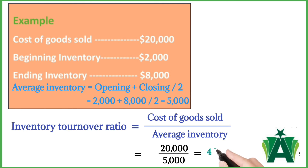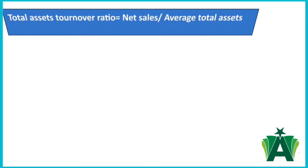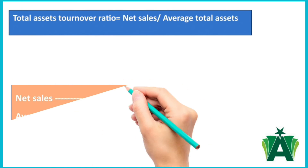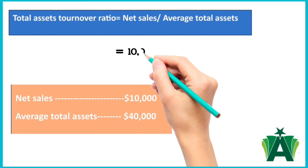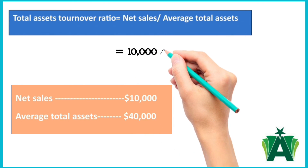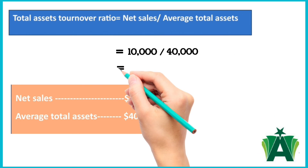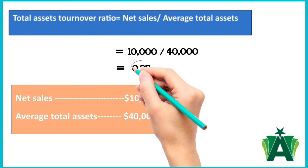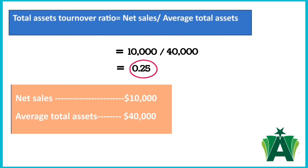Total Assets Turnover Ratio is calculated as net sales divided by average total assets. Consider a company with net sales of $10,000 and average total assets of $40,000. The total assets turnover ratio is 0.25. This means that for every dollar invested in its assets, the company generates $0.25 in sales.